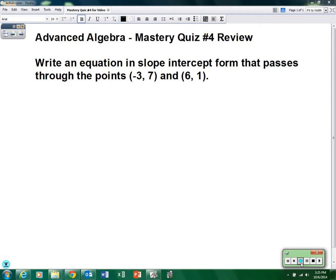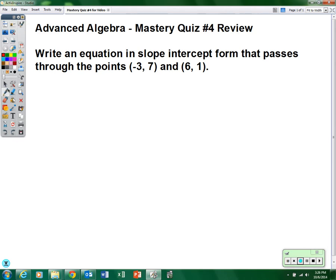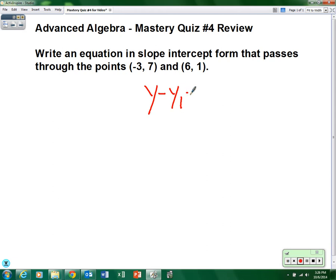Now remember, the point-slope formula is y minus y₁ equals m times (x minus x₁). You're going to have to have that memorized. Well, looking at it, we need to know the slope.